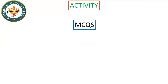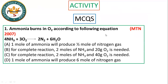MCQ 1: Ammonia burns in oxygen according to the following equation — 4NH₃ + 3O₂ → 2N₂ + 6H₂O. The question is: 1 mole of ammonia will produce how much nitrogen? When 4 moles of ammonia give 2 moles of nitrogen, nitrogen is always half of ammonia. So 2 moles of ammonia give 1 mole of nitrogen, and 1 mole of ammonia gives half a mole of nitrogen. The answer is A.